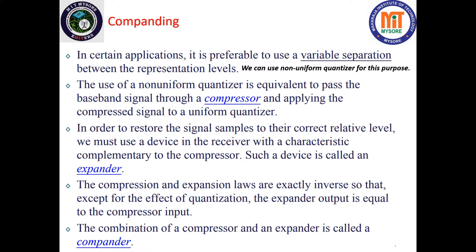If the signal is very slow or going at a lower pace, the step size will be small. Thereby, large amplitude levels are represented by a larger step size and weak passages are represented by a smaller step size. In this way, nearly uniform percentage precision is achieved throughout the greater part of the amplitude range of the input signal, and fewer steps are needed than would be the case if a uniform quantizer were used.